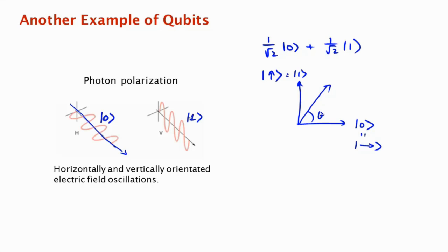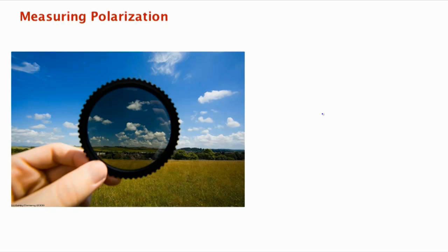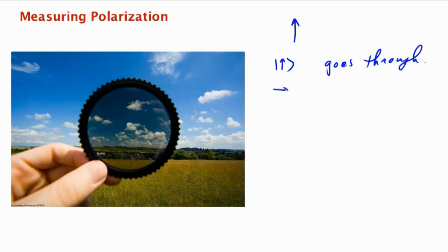How do you measure the polarization of a qubit? You use a polarizing filter — a polarizing lens. This is the same kind of polarizing lens you might have in your sunglasses. The polarizing lens has a certain orientation. For example, this filter might be vertically oriented, which means if there's a photon coming through and it's vertically polarized, it goes through. But if it's horizontally polarized, it gets blocked. So it's performing a measurement.